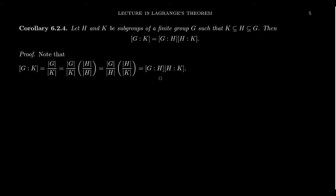This divisibility condition is extremely powerful for finite groups. Now for our last corollary: suppose we have two subgroups H and K inside of G, with a chain K ⊆ H ⊆ G. By transitivity, K is also a subgroup of G. It turns out we can factor the index of K in G as the product of the index of H in G and the index of K in H.